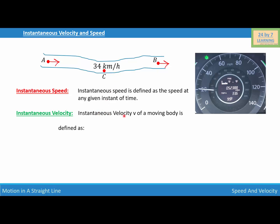Instantaneous velocity v of a moving body is defined as v equals limit delta t tends to zero, delta x over delta t, which is equal to dx over dt.